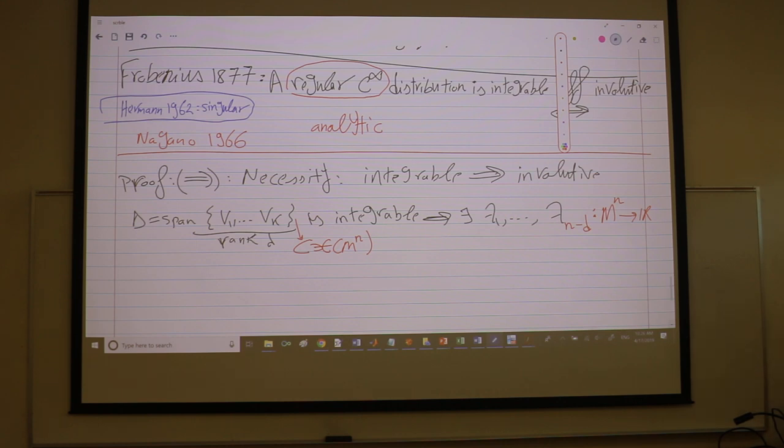And because it's integrable, then the Lie derivative of any function of these guys along any vector is just zero for all i in the collection and j in the other collection. Any question about that?